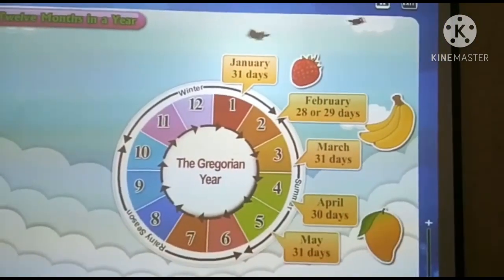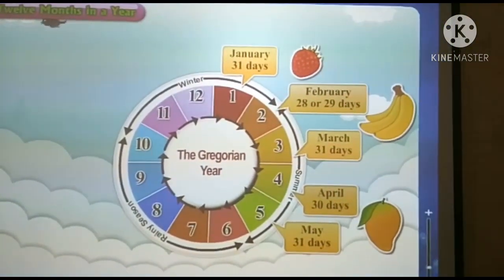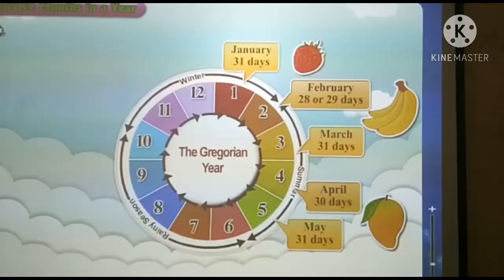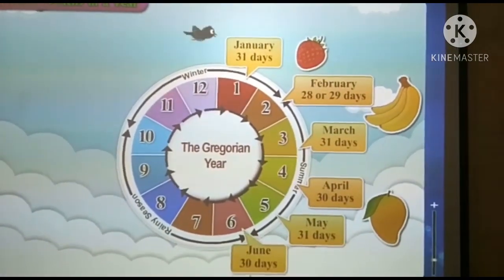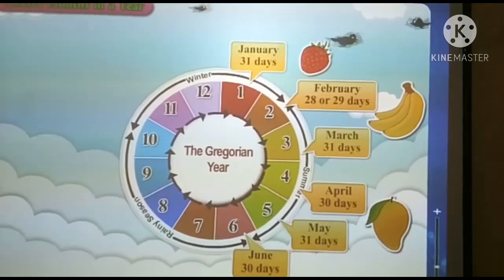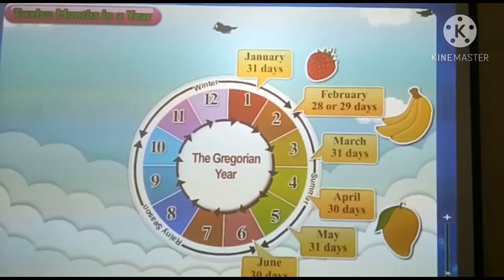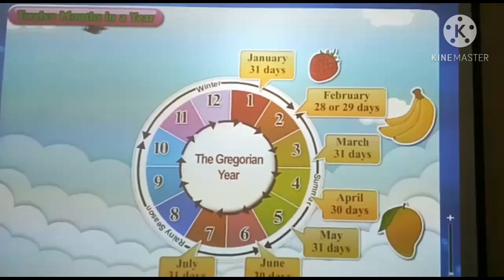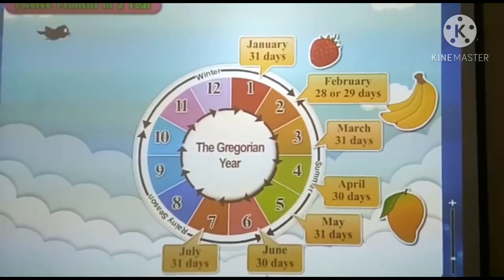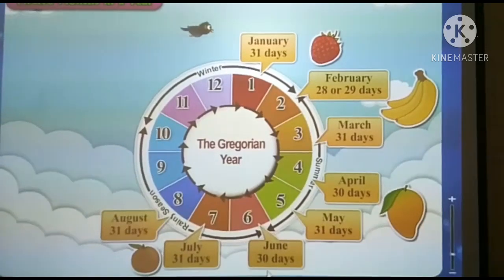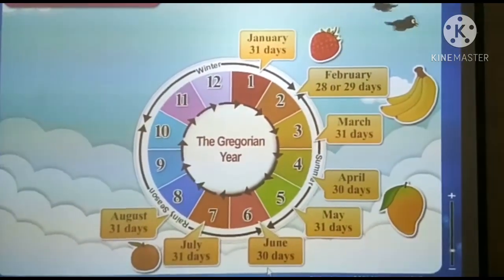April has 30 days. Then comes May. May is the fifth month and has 31 days. June is the sixth month and has 30 days. July is the seventh month and has 31 days. August is the eighth month and has 31 days.